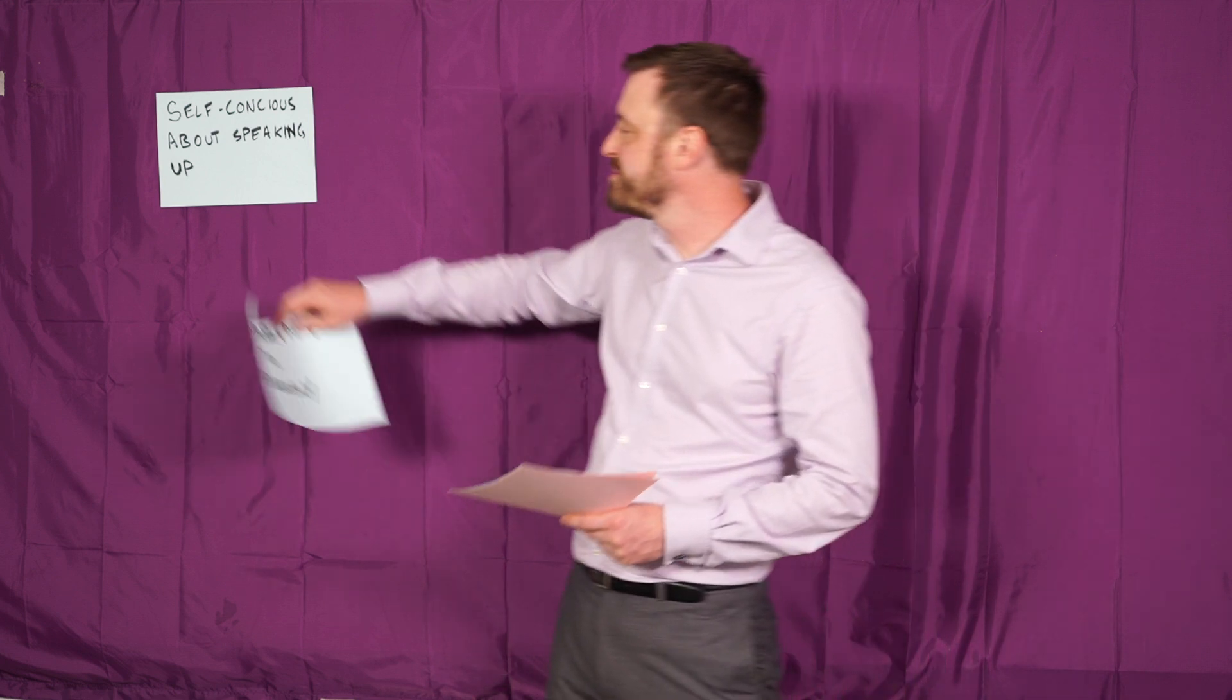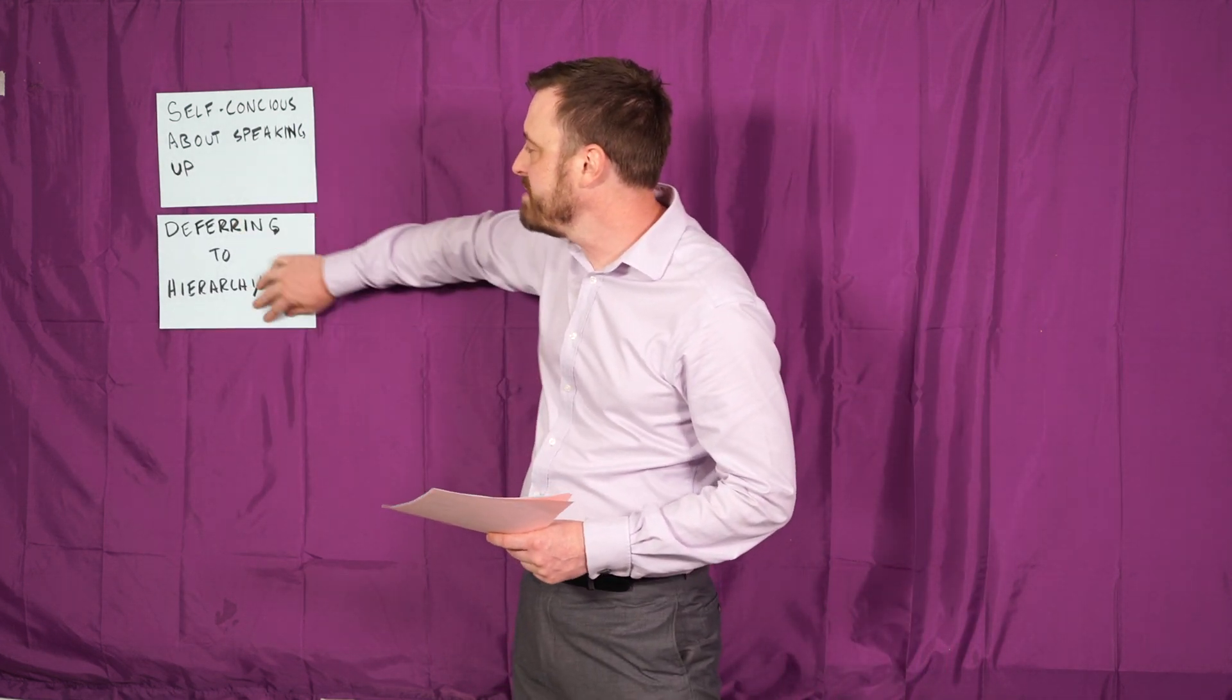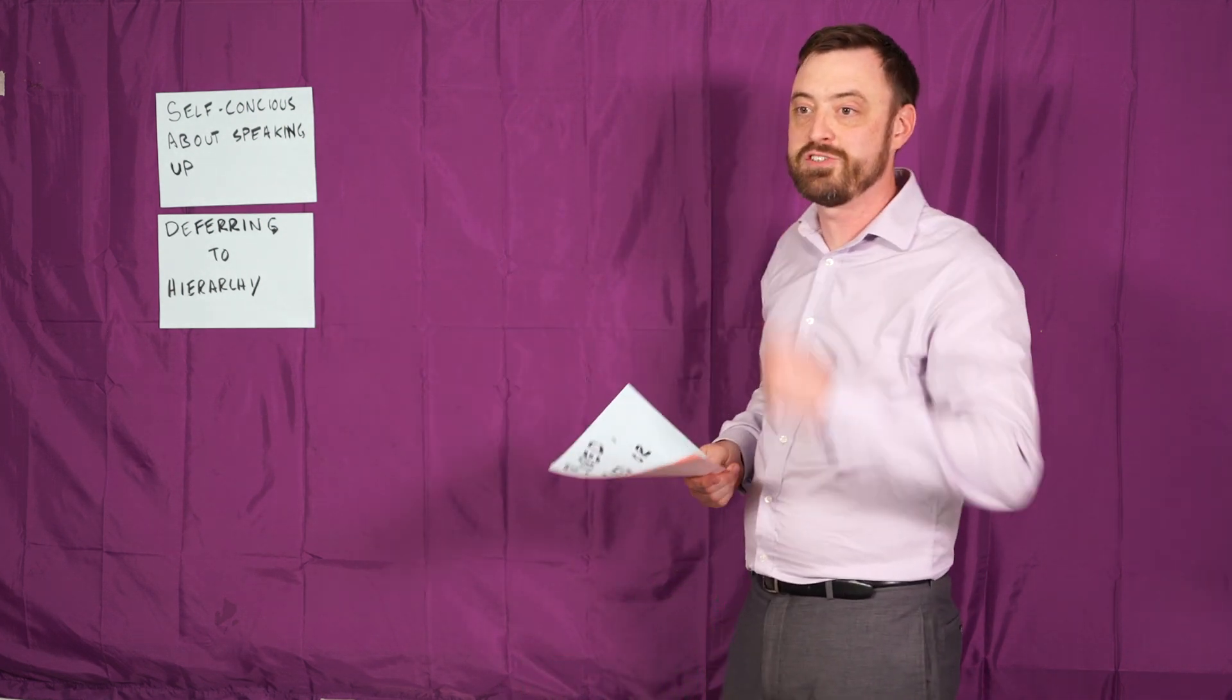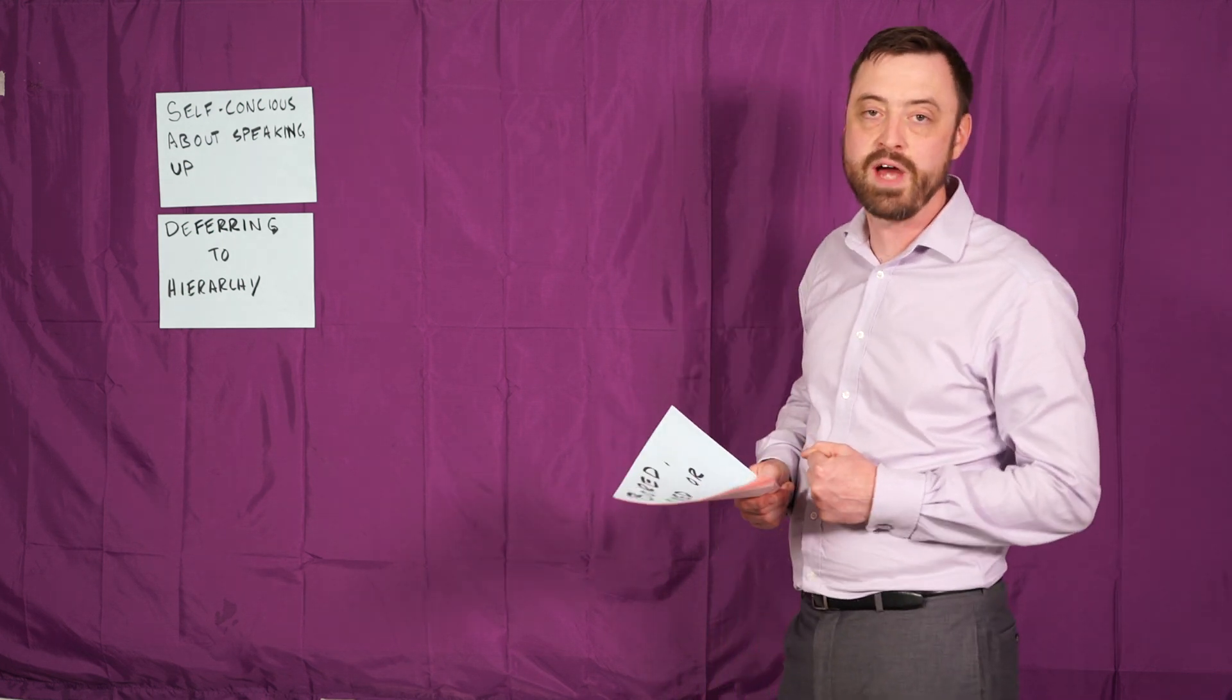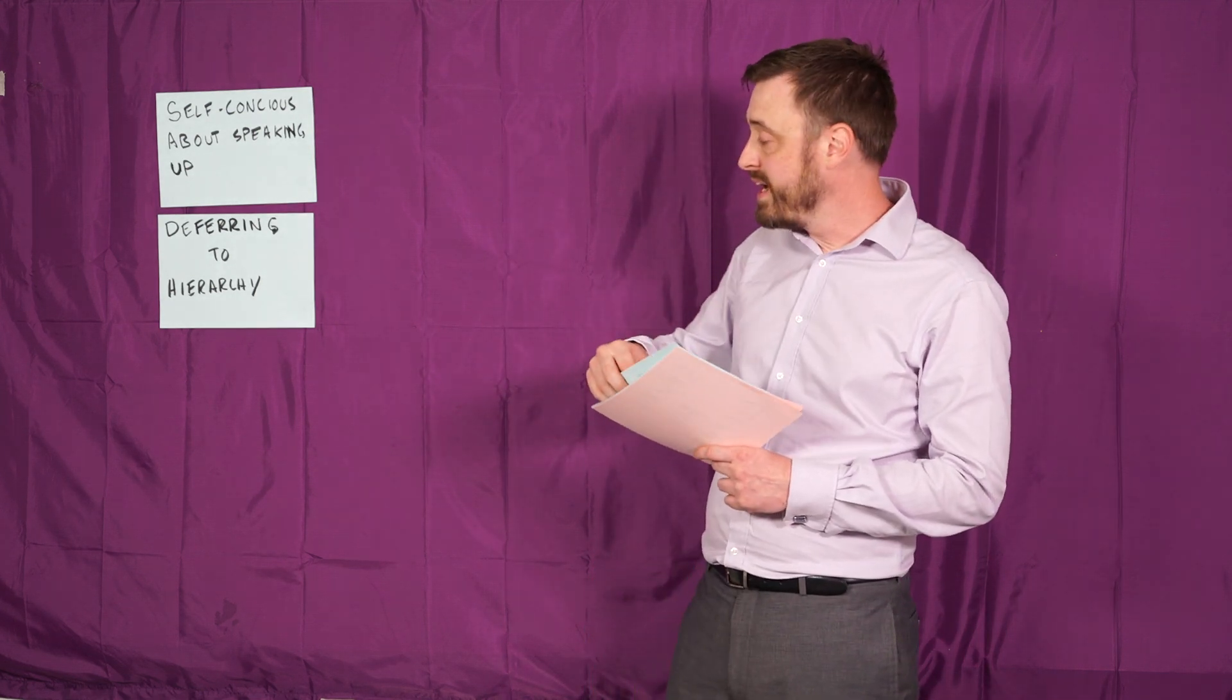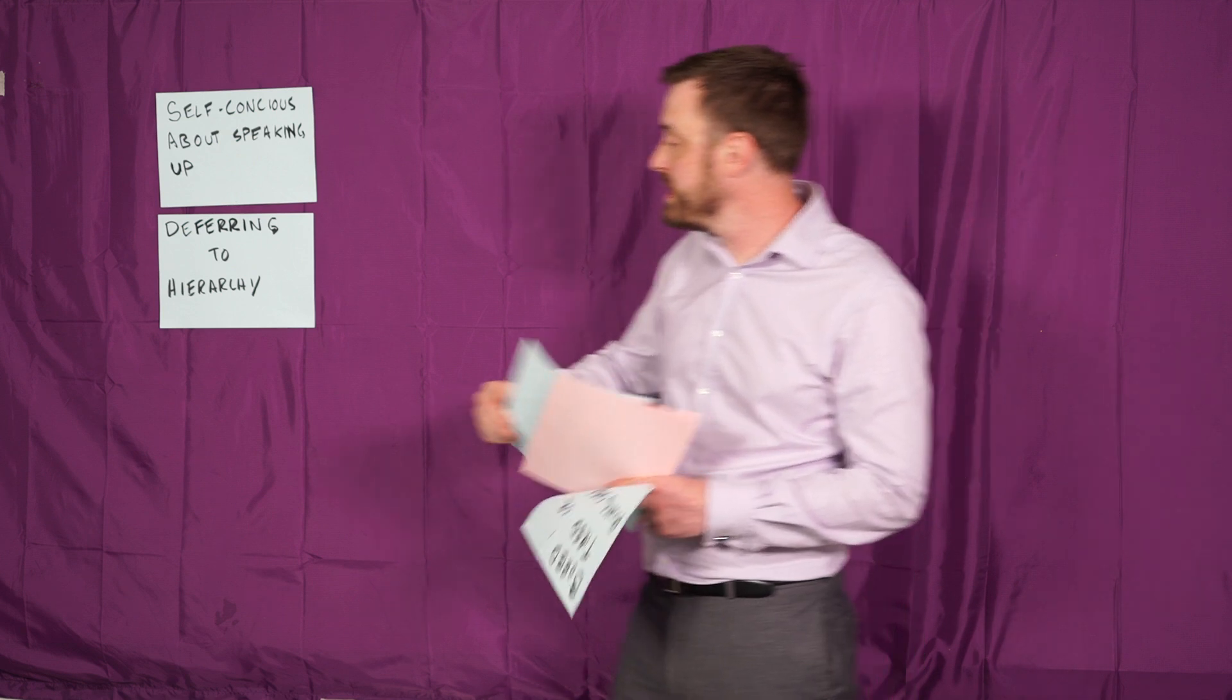One way of being afraid to speak up is about deferring to hierarchy. Even people who are quite confident normally might find themselves keeping quiet when their boss or their boss's boss is across the room, which is often the case when you're planning strategy. So sometimes you get people who might be confident in a different situation but are afraid to speak up when they're afraid of being judged.